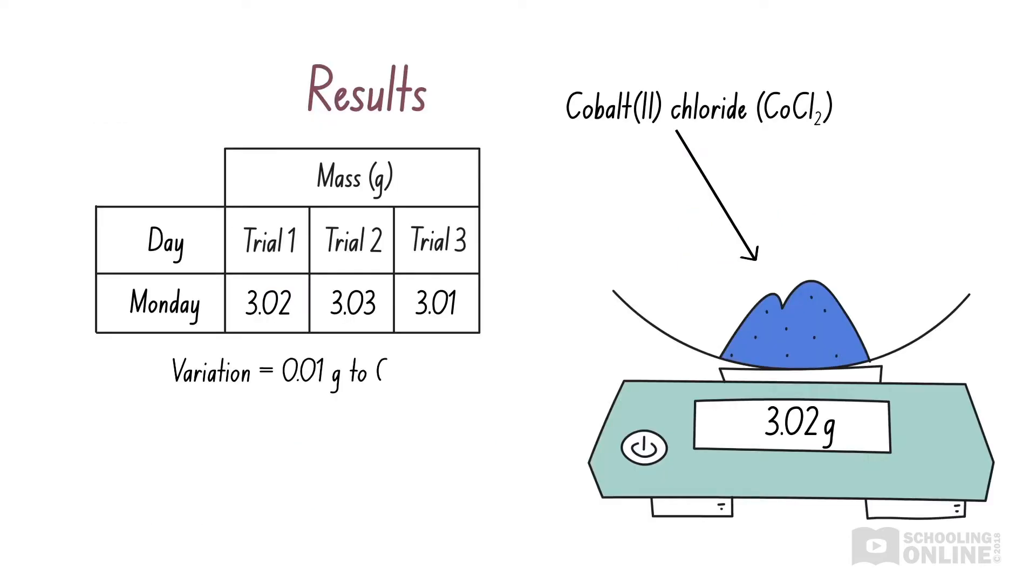Since the differences between the measured weights are about the same as the increments of the electronic mass balance, 0.01 grams, we can say that the random errors are small. This means that the results you recorded on Monday are reliable.